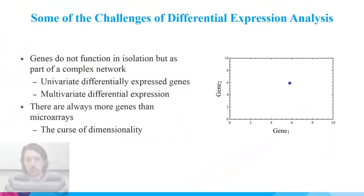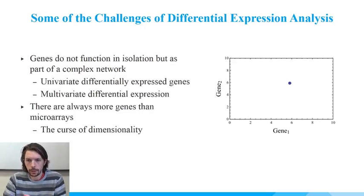Lastly, there are always much fewer microarrays than there are genes. What this means is that the points in this gene expression space, as the number of genes increases, the points become more and more dilute, and we have a harder time characterizing the structure in the data. This is a statistical issue.